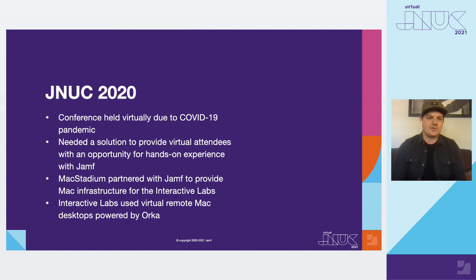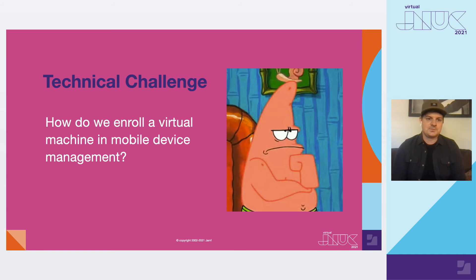So for JNUC 2020, as I mentioned before, the conference was held virtually due to the COVID-19 pandemic. We needed a solution to provide virtual attendees with an opportunity for hands-on experience with Jamf. Mac Stadium actually partnered with Jamf to provide Mac infrastructure for the interactive labs, and those interactive labs used virtual Mac remote desktops powered by Orca. So the technical challenge here is: how do we enroll a virtual machine with Apple Device Enrollment and integrate it with something like Jamf?